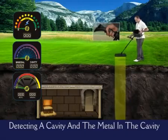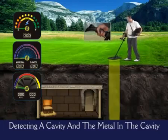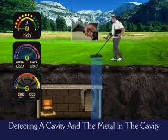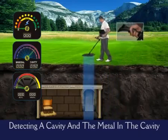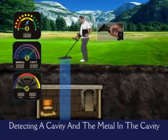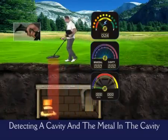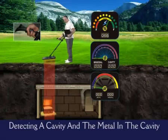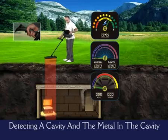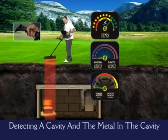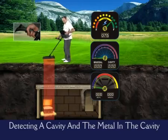When the user gets a cavity signal, the bar on the cavity indicator will rise according to the size of the cavity, and you will hear a different tone sound during detection. When the system detects metal inside the cavity, the bar on the scope will move and notify the user that there is a metal inside the cavity.